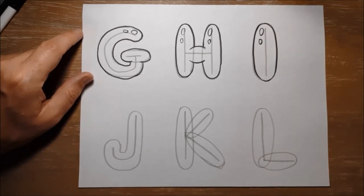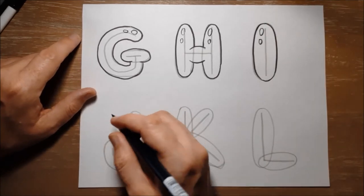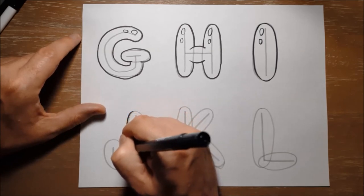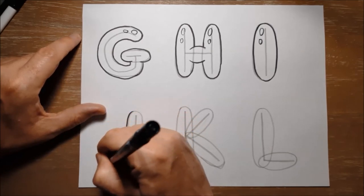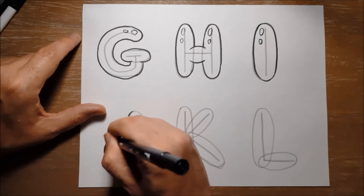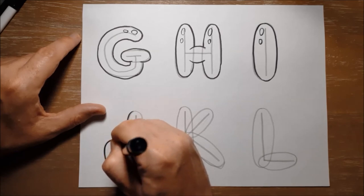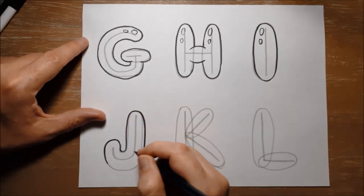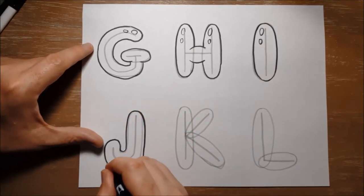Now next we have J, and the keyword we use for J is jug, so J jug, J, there we go, J jug, J.